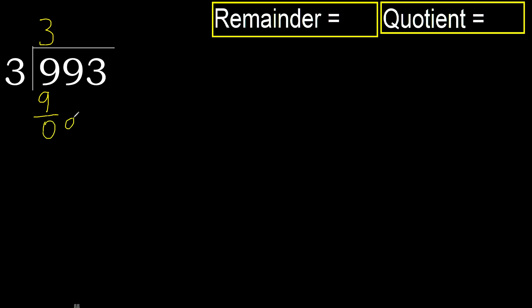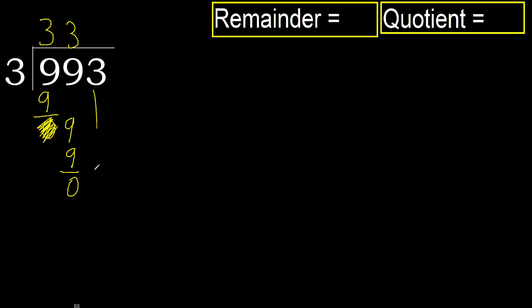Next, bring down, eliminate 0. We have 9. 3 multiplied by 3 is 9. Subtract, next, eliminate 0.